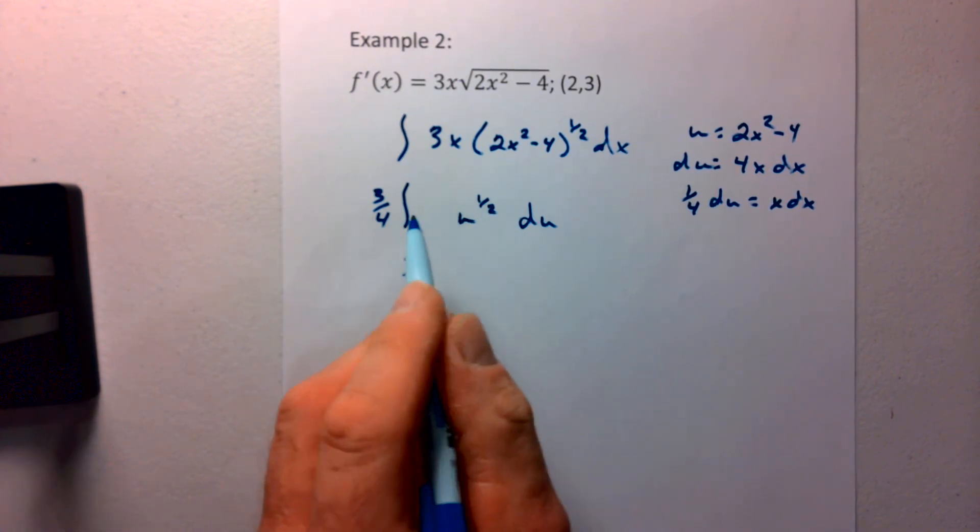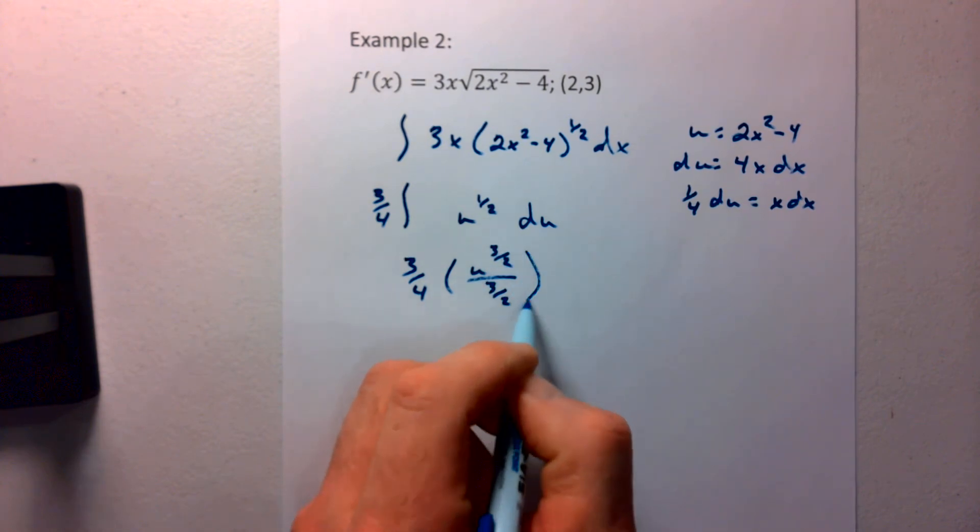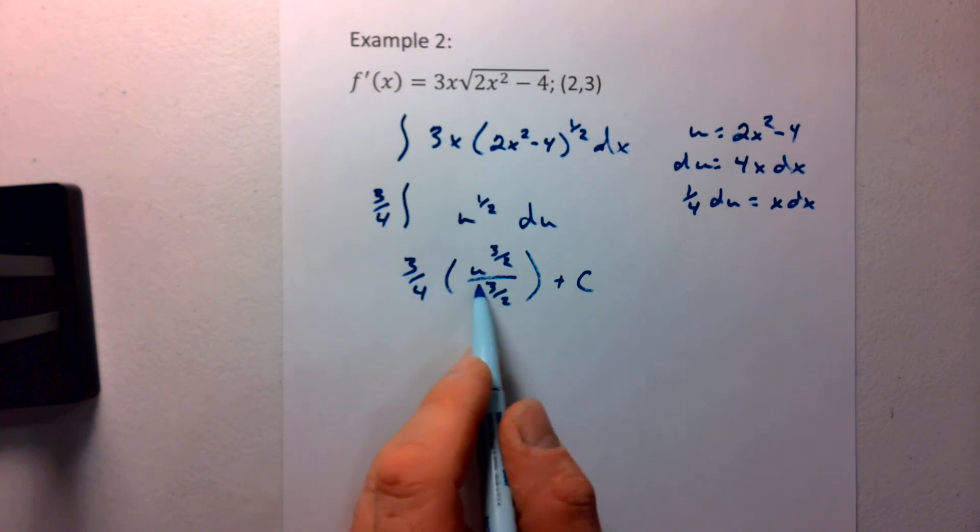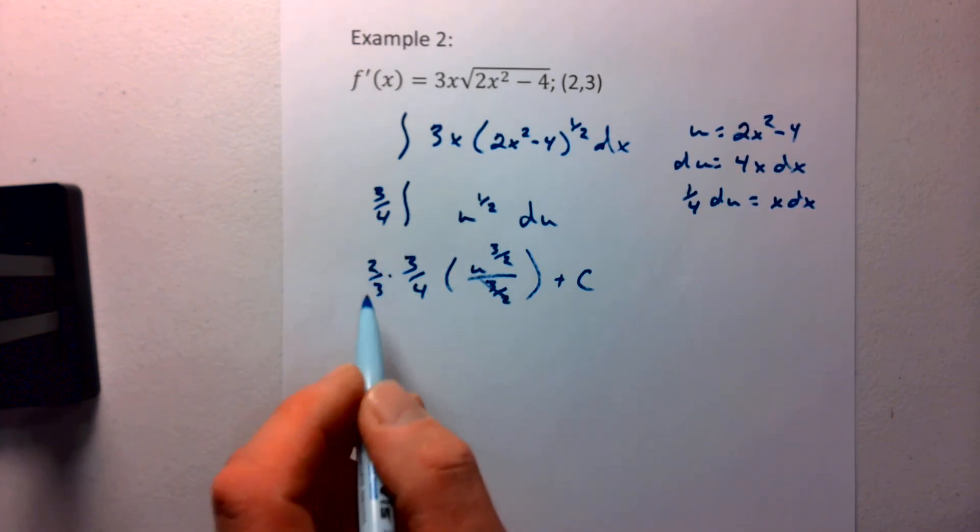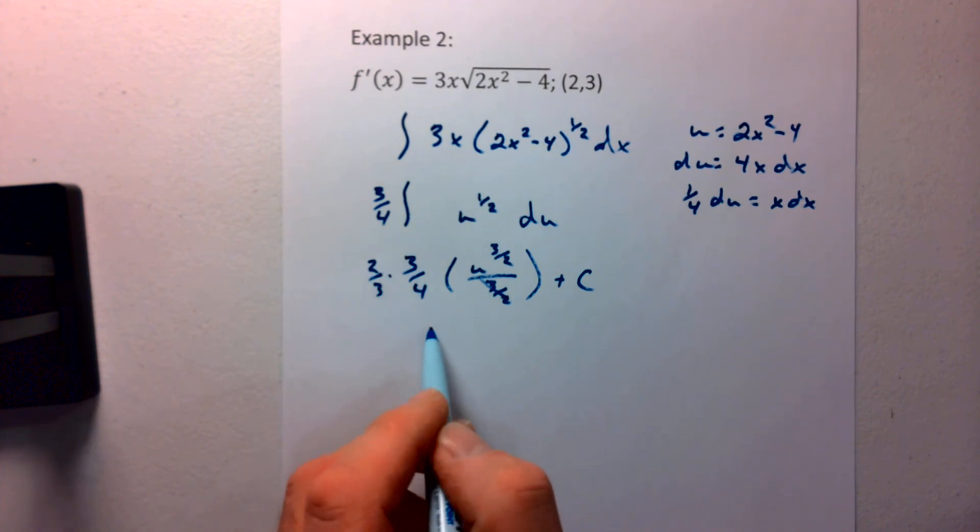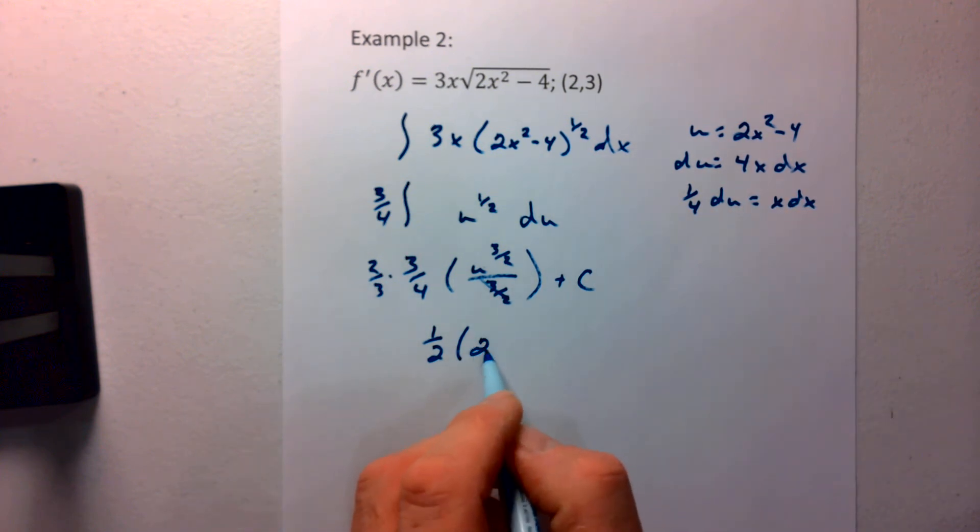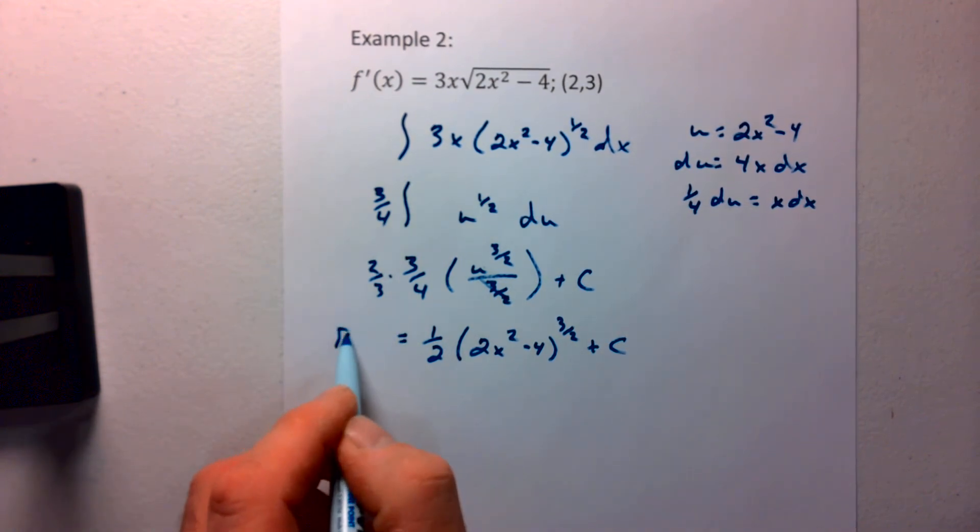If I integrate u to the 1 half, that gives me u to the 3 halves divided by 3 halves plus my c. Now we can clean this up if I multiply by 2 thirds there. And 2 thirds times 3 fourths, that's going to be 1 half. So we have 1 half u. u is actually 2x squared minus 4 to the 3 halves plus c. And that's my f of x function in terms of that constant.